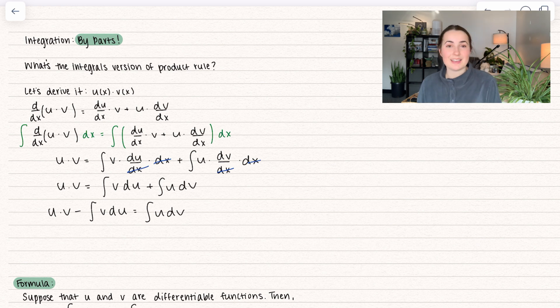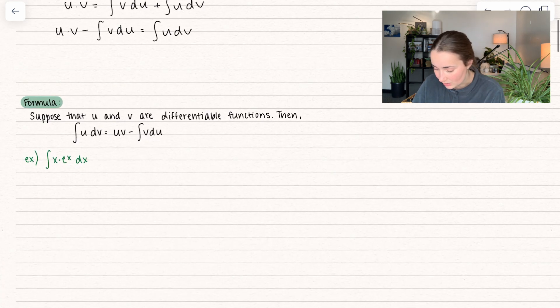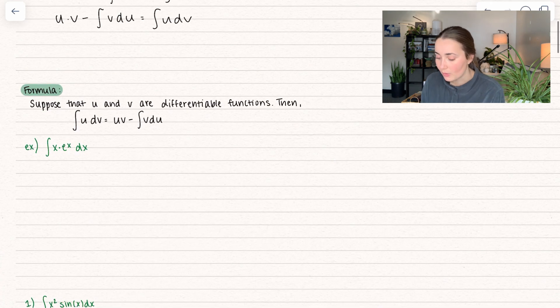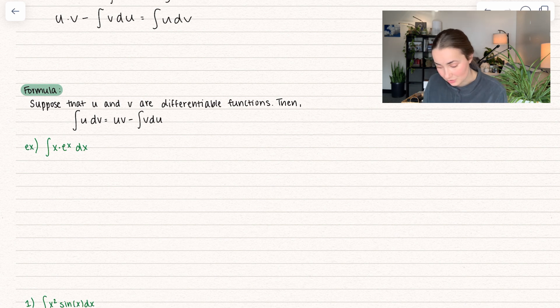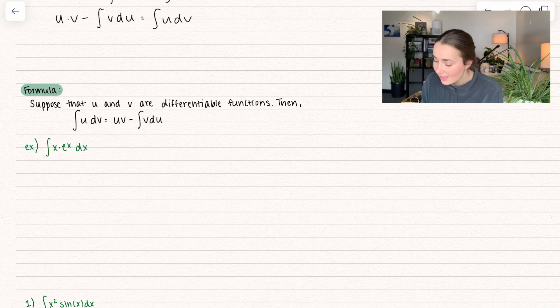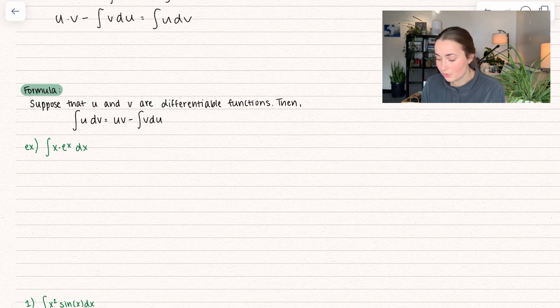So we get u·v minus the integral of v du equals the integral of u dv. And that right there is integration by parts. So the formula is: suppose u and v are differentiable functions in terms of x. Then the integral of u dv equals u·v minus the integral of v du.